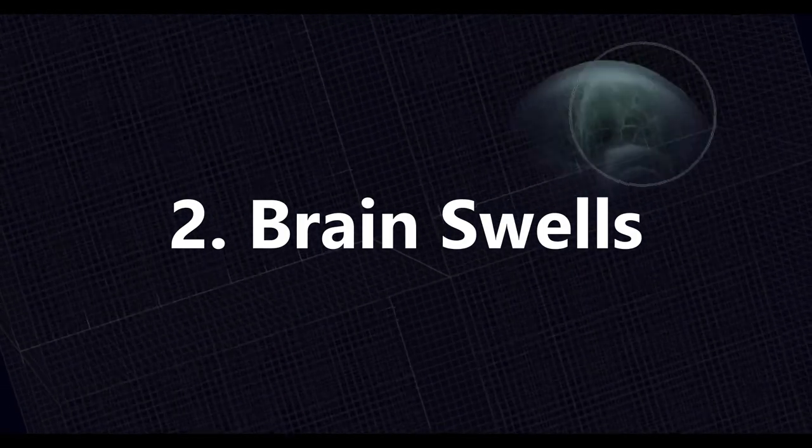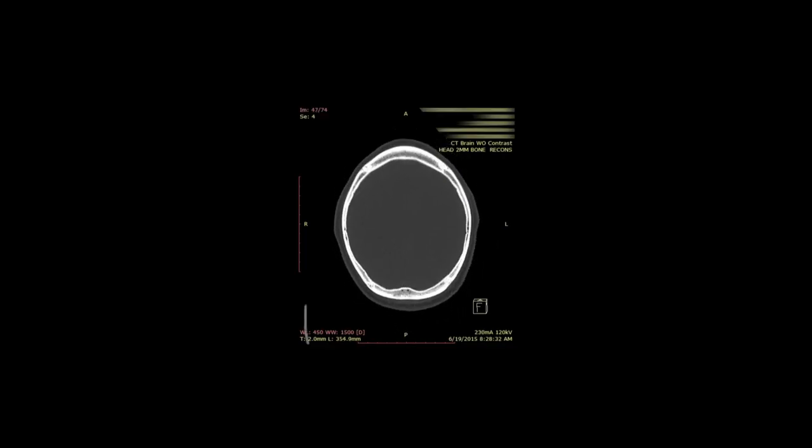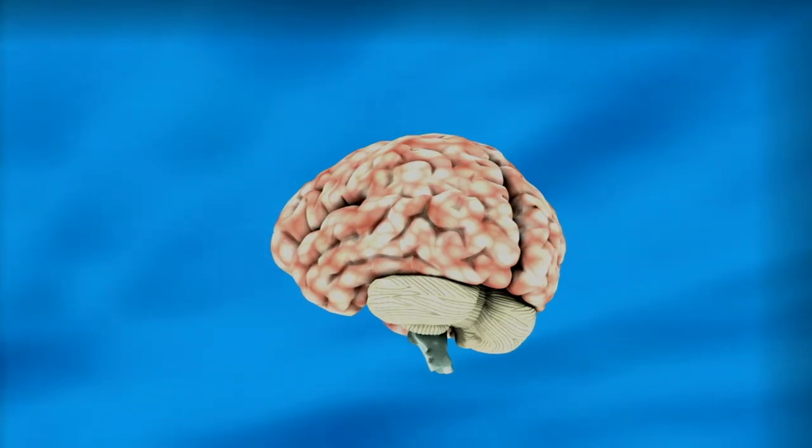Number 2: The Brain Swells. If electrolytes are reduced, it can cause the brain to swell, which will have some effects on your health and could be extremely serious. When brain cells swell, the pressure inside the skull increases.